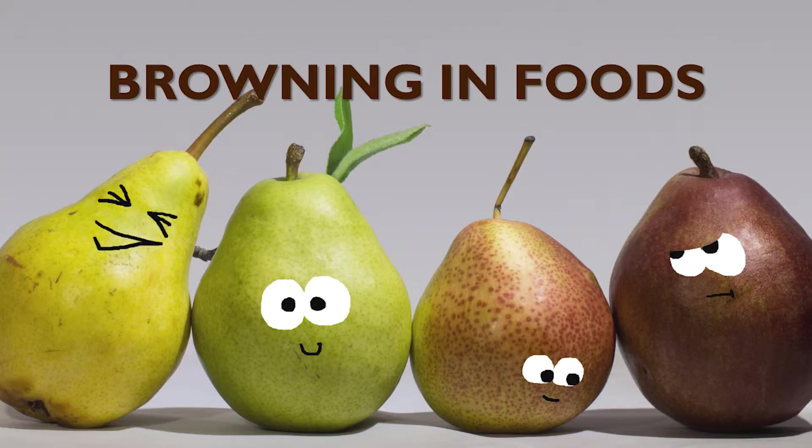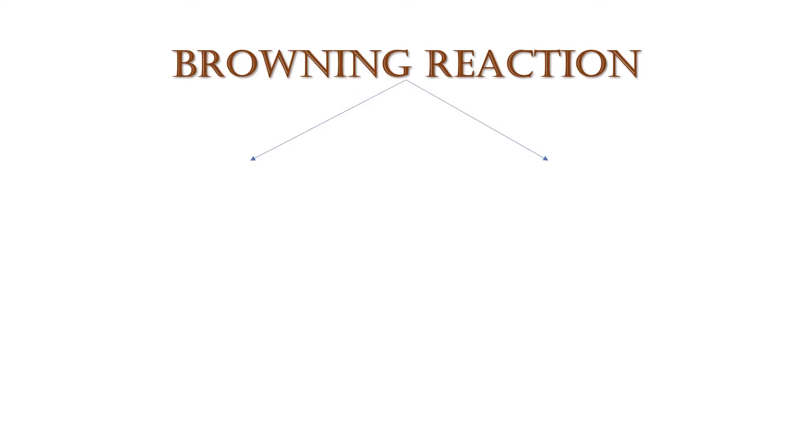You will be introduced to the topic of browning reactions in food. Browning is a process of food turning brown due to the chemical reactions that take place within. They can be categorized into two: enzymatic and non-enzymatic browning.